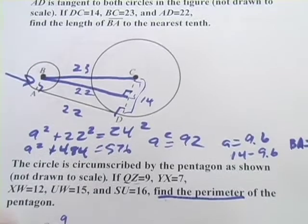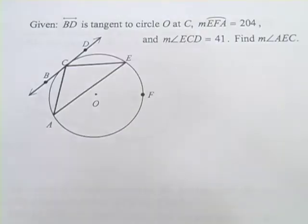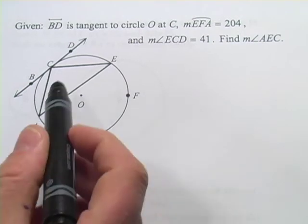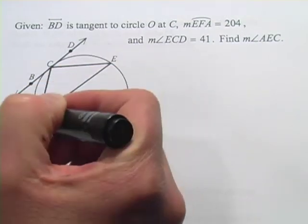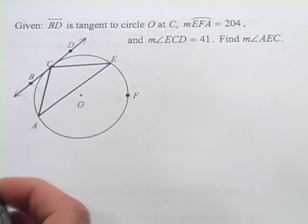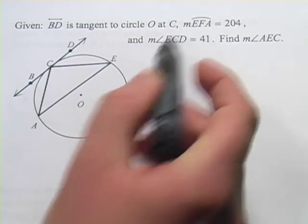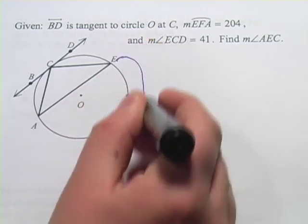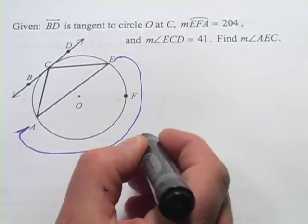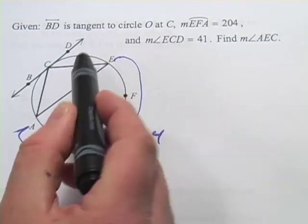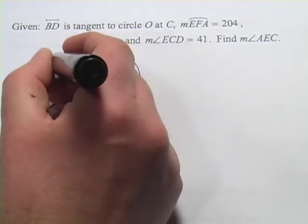All right, let's do one more. This one's a little bit different. So here we have this triangle. We've got a tangent line. It says BD is tangent to the circle at point C. And then we have this arc measure EFA is 204. So this guy right around here, 204. And they're also telling us the measure of angle ECD. So this angle right here is 41.